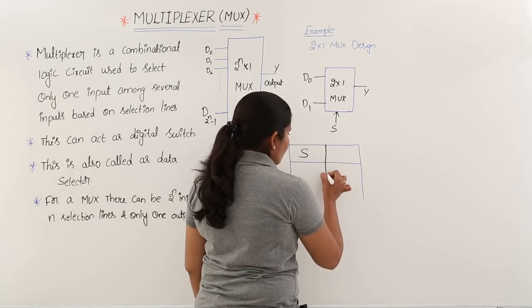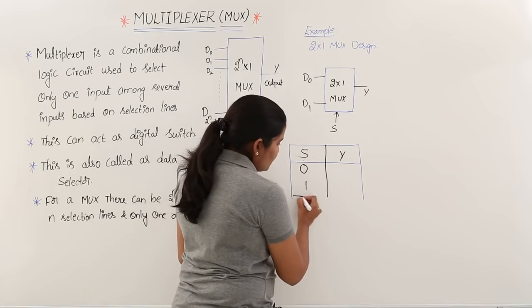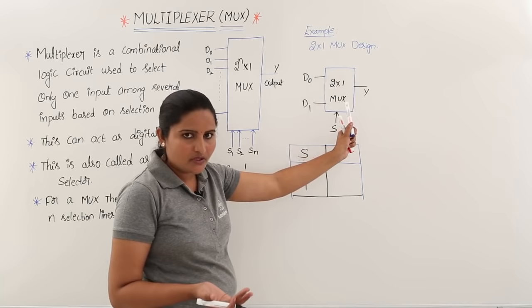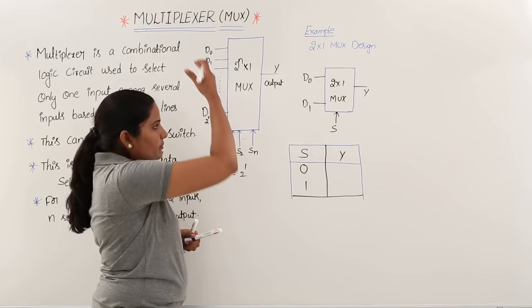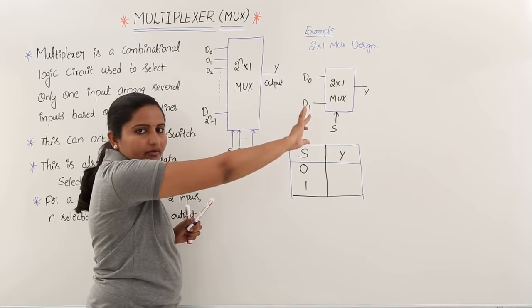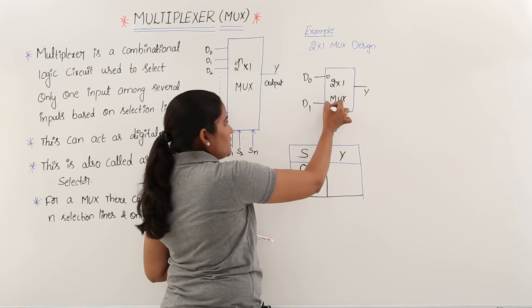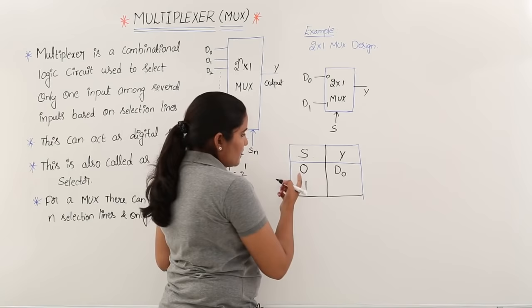With only one selection line, there are two possible combinations: S equals 0 or S equals 1. If selection line S is 0, whatever data is at port 0 (D0) comes to the output. If S equals 1, whatever value is at the first port (D1) comes to the output. This same principle extends to larger MUXes — if the selection value is 4, the fourth port value goes to output.